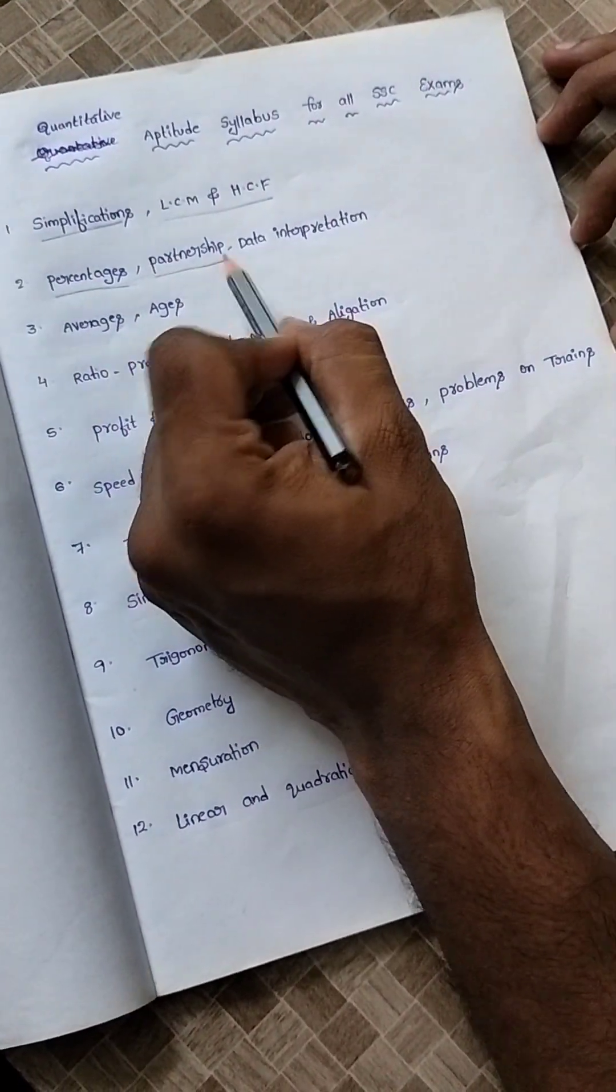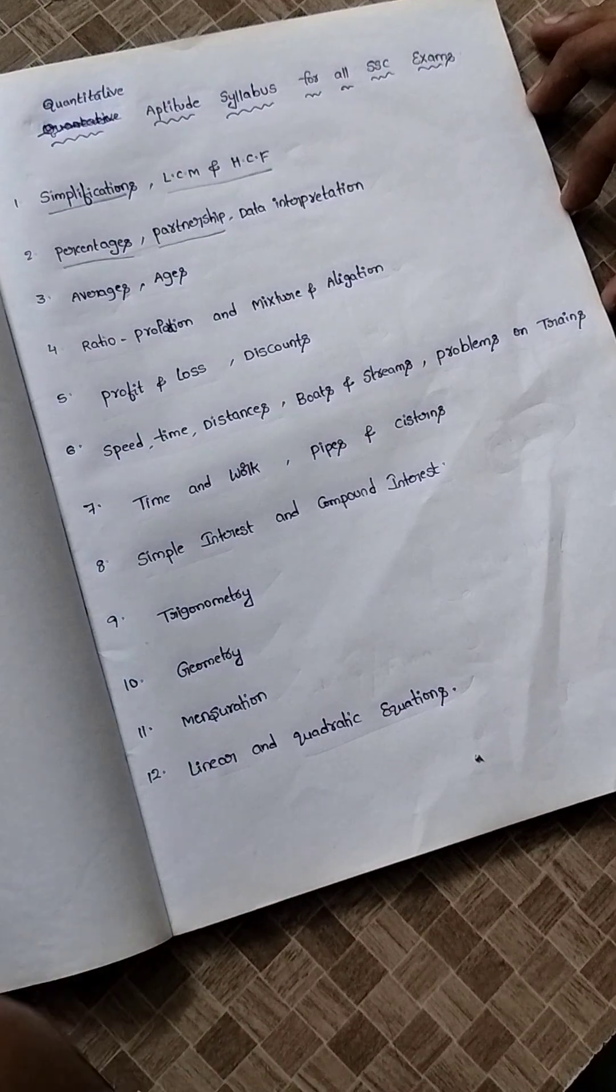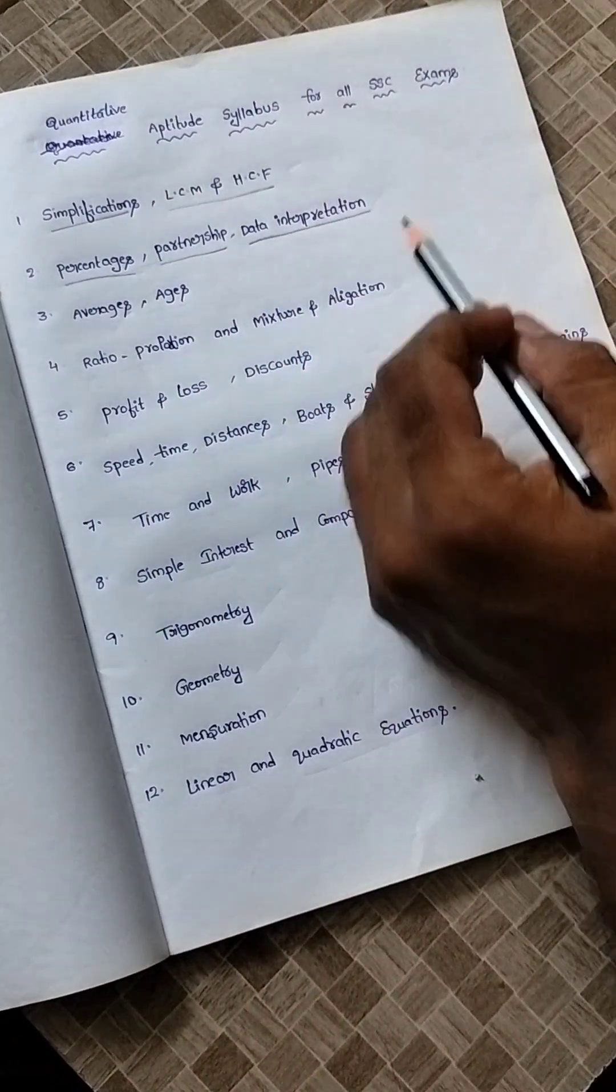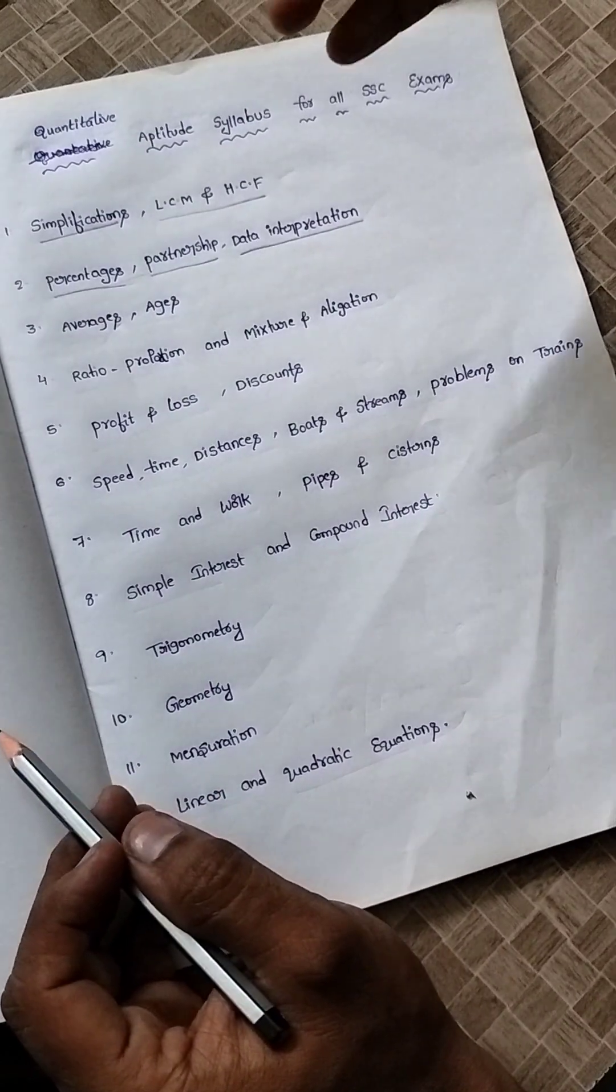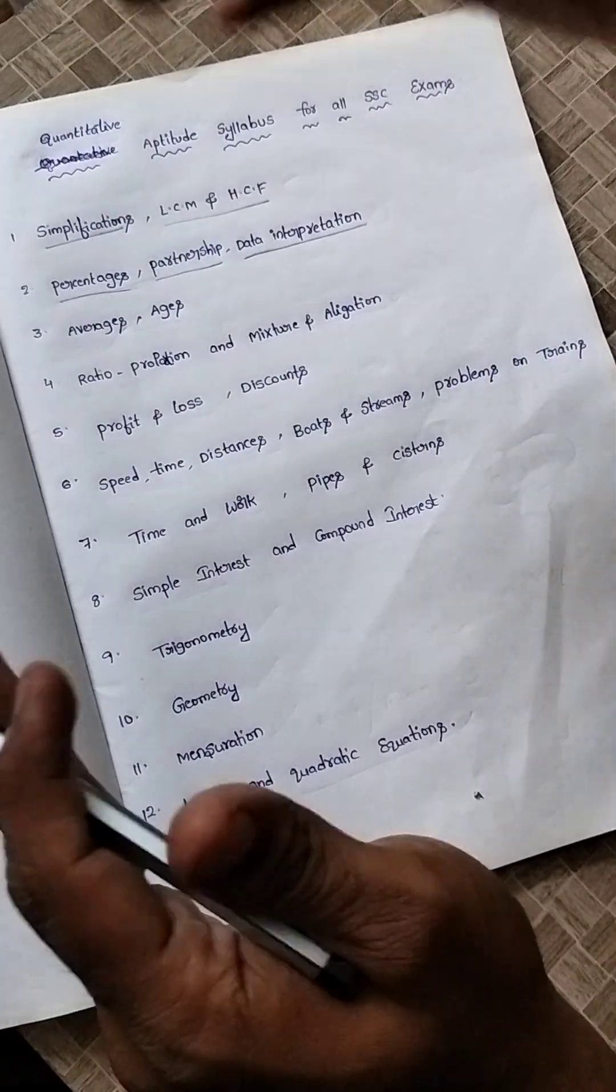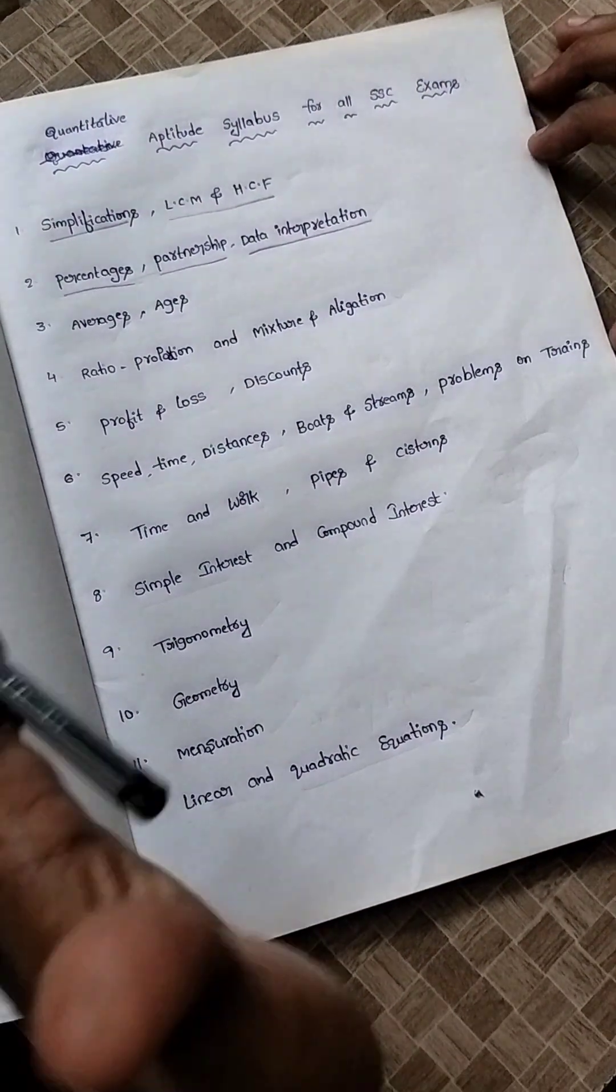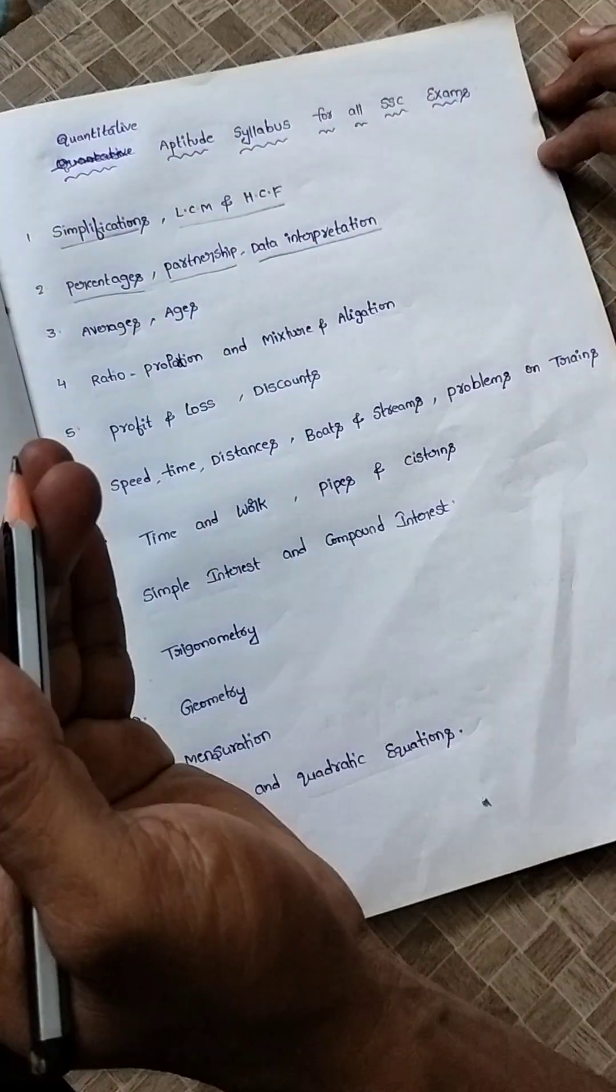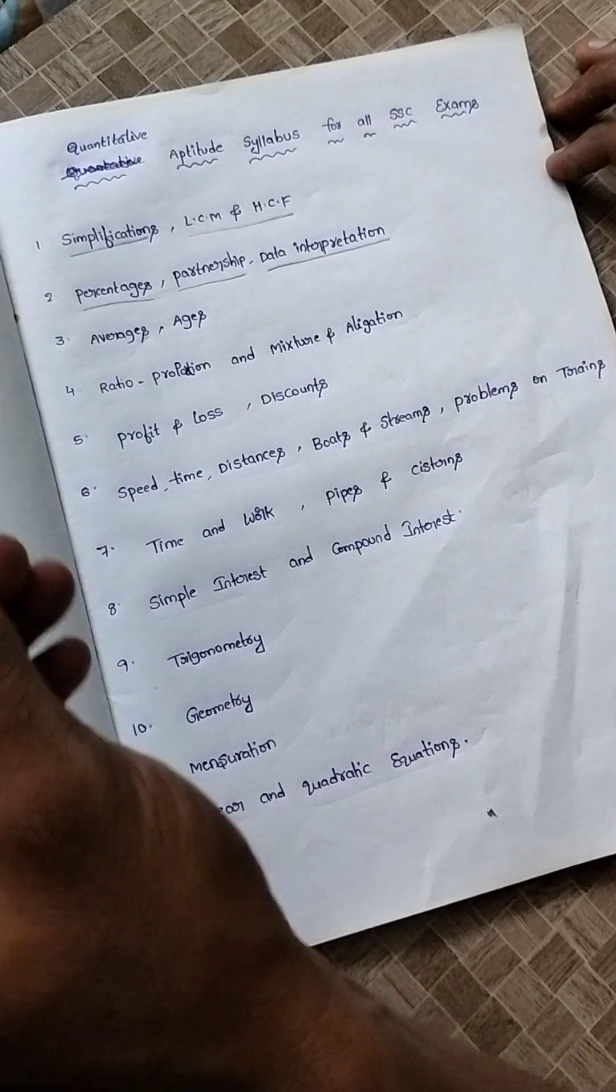After that, partnership. This comes most of the time with investment and profit, as well as data interpretation. In data interpretation they may add ratios as well as percentages, as well as partnership. It will come in pie charts, histograms, and different types.